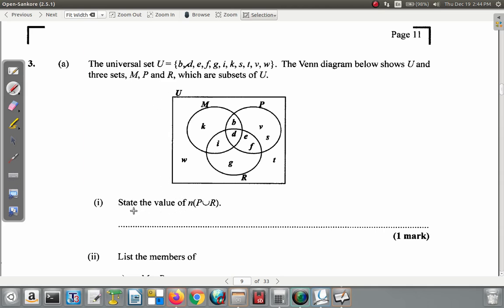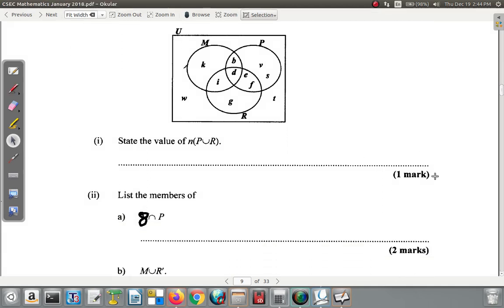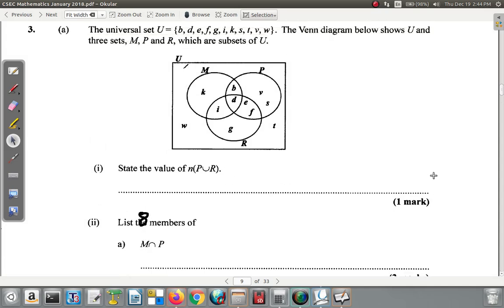The answer is eight. Then part (ii) says list the members of M intersect P.